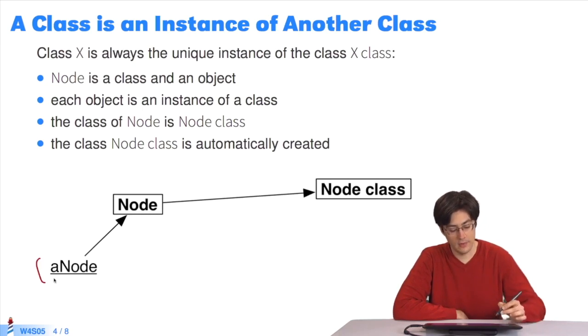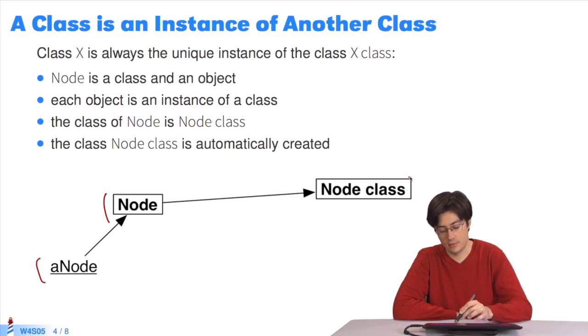A node is an instance of node class. Since node class is an object, node class is an instance of another class. It is called node class class.